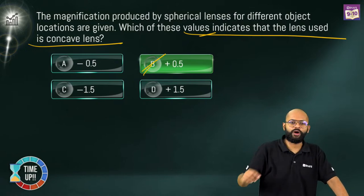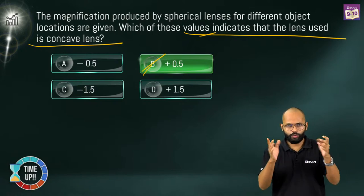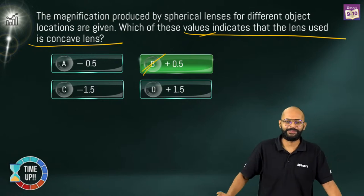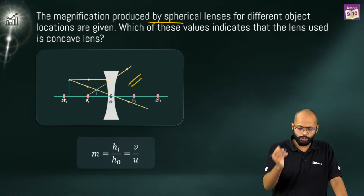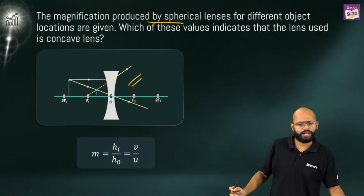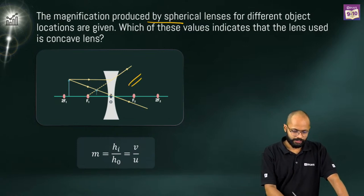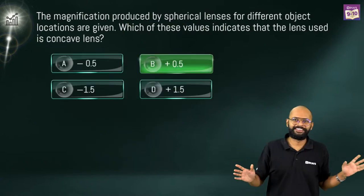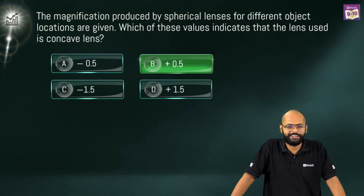If this much is clear, you are figuring out everything in light. I see confusion between options A and B. Concave lens always gives virtual, erect, and diminished image — same as a convex mirror. So the magnification must be positive and less than 1, which is why the answer is plus 0.5. Magnification is h_i upon h_o equals v upon u.